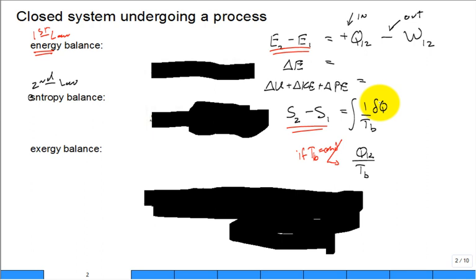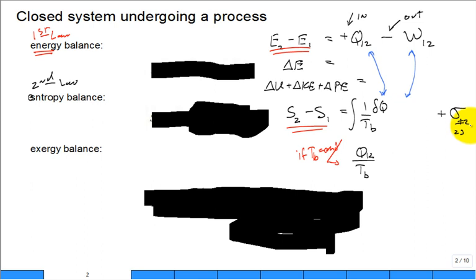Is there an entropy transfer term analogous to work in the entropy balance? There is definitely entropy transfer with heat transfer. The last term in the entropy balance is the entropy generated during the process — sigma — due to irreversibilities. But there is no entropy transfer term associated with work.